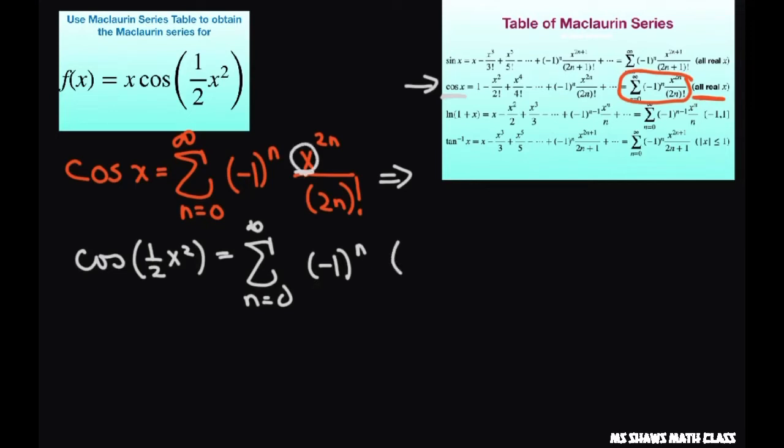So for this x, I'm going to substitute it in for one half x squared to the power of 2n, all divided by 2n factorial.